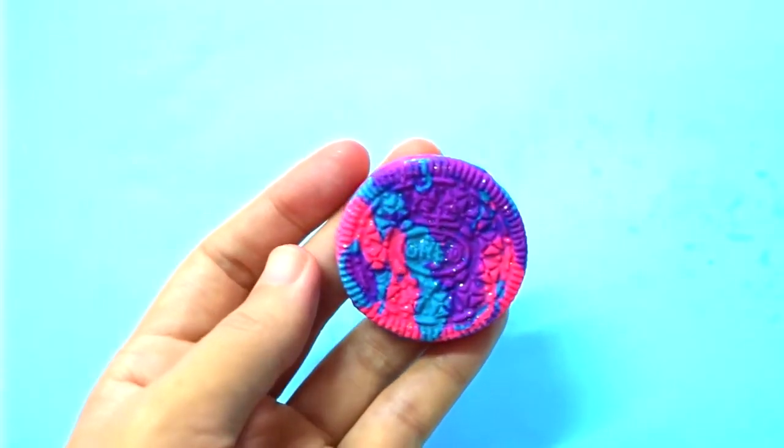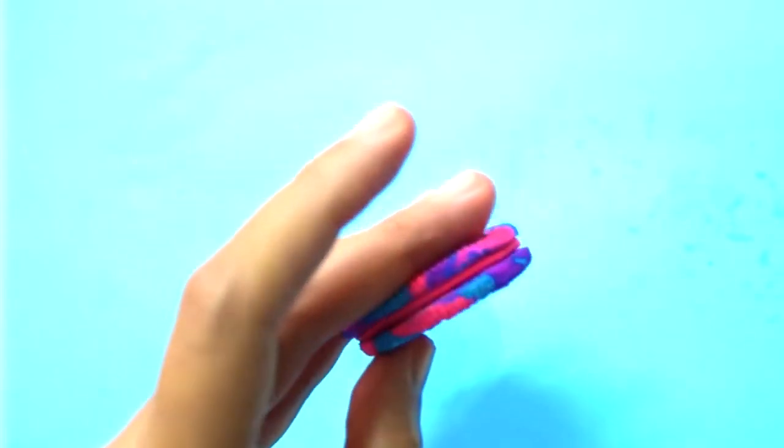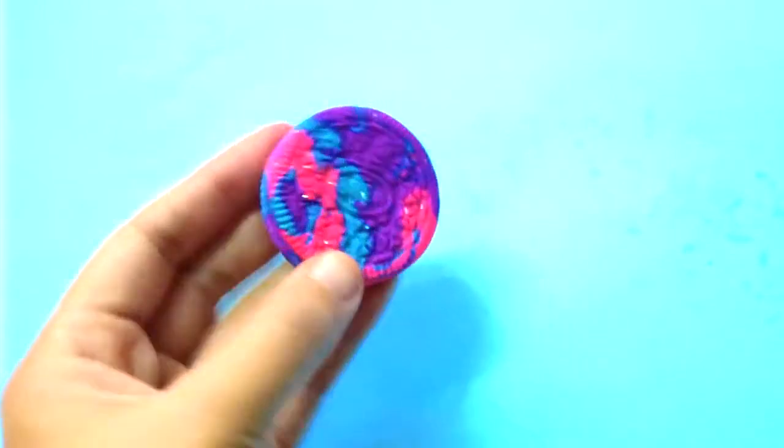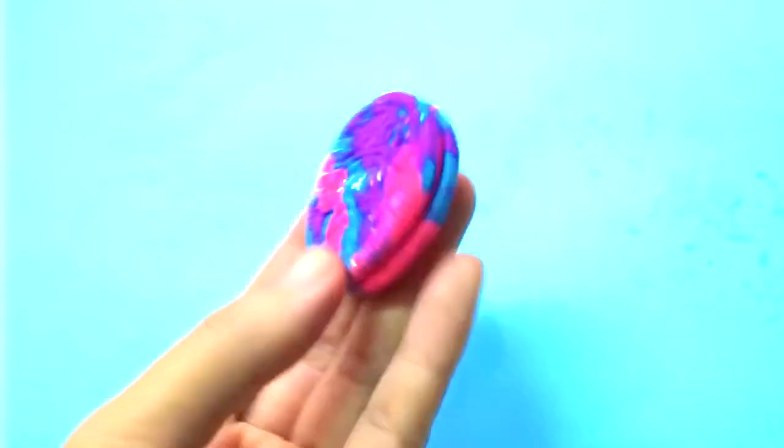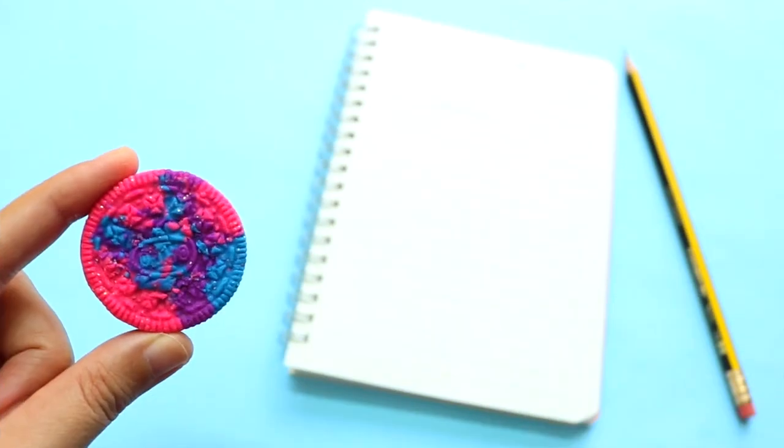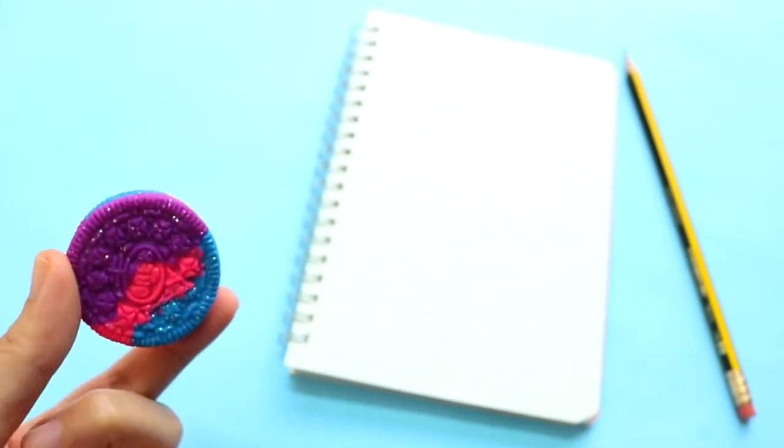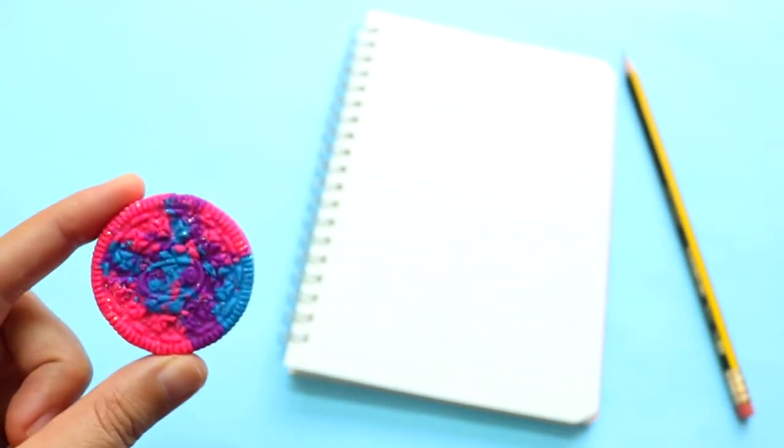Once it's done, make sure you wait for your eraser to cool down completely before removing it from the baking tray. And that's pretty much it. I hope you guys like this idea and will give it a try. If you enjoyed this video, please give it a thumbs up and subscribe to my channel for more videos like this. Thank you so much for watching and I'll see you next time.